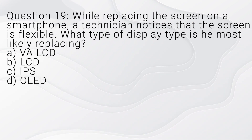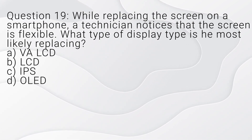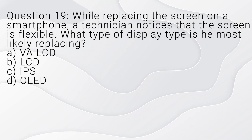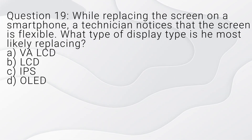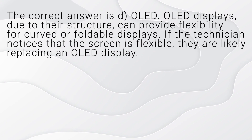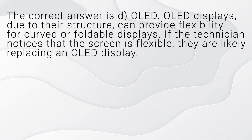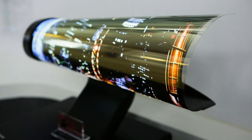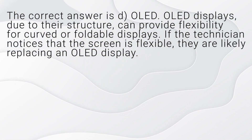Question 19. While replacing the screen on a smartphone, a technician notices that the screen is flexible. What type of display type is he most likely replacing? The correct answer is D, OLED. OLED displays, due to their structure, can provide flexibility for curved or foldable displays. If the technician notices that the screen is flexible, they are likely replacing an OLED display.